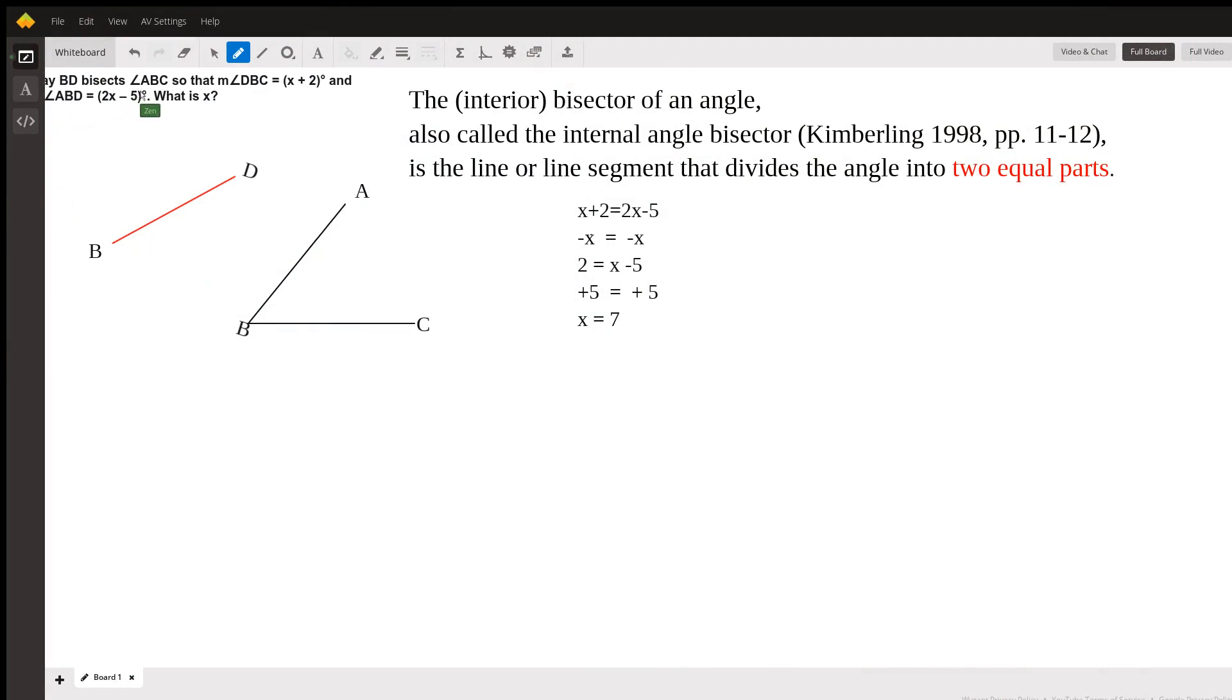Okay, Ray BD bisects angle ABC so that the measure of DBC equals x plus 2 and the measure of ABD equals 2x minus 5. What is x?